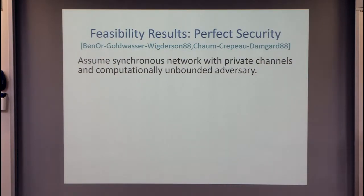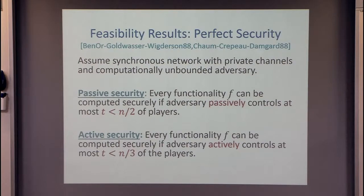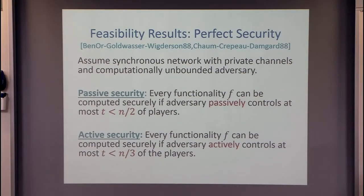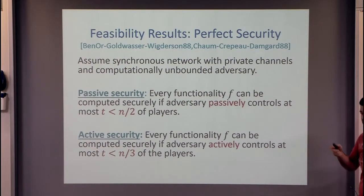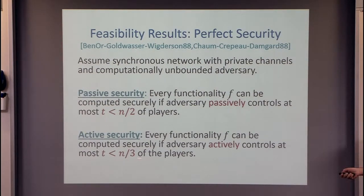We have two classical results. One is with passive security, where the adversary sees whatever the players it controls see, but they cannot deviate from the protocol. In the passive setting, every function or functionality can be computed securely as long as the adversary controls strictly less than a majority of the players. In the active setting, every function or functionality can be computed securely as long as the adversary controls less than a third of the players.